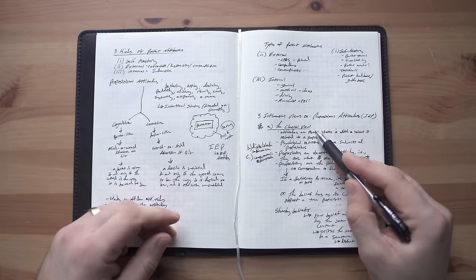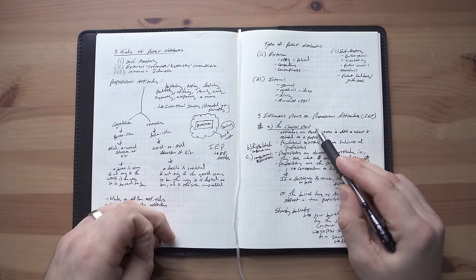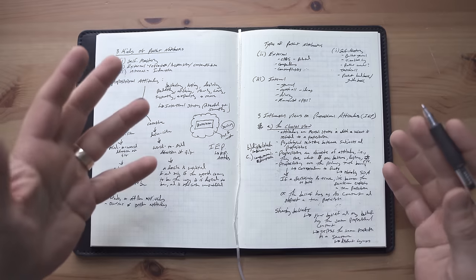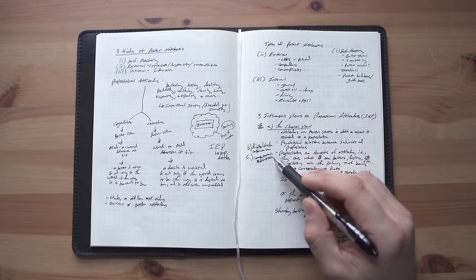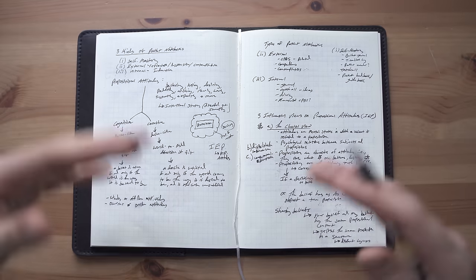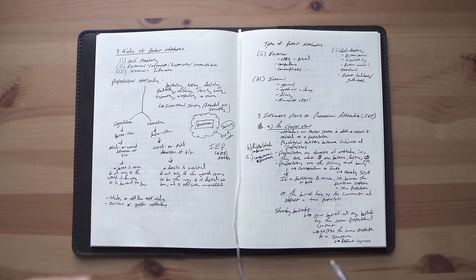So here I'm assuming the classical view on propositional attitudes presented by figures like Gottlob Frege and Bertrand Russell. There's also a dispositional view and a computational slash representational view, but that's way too deep. I'm just going to assume the classical view and you can fight me in the comments.